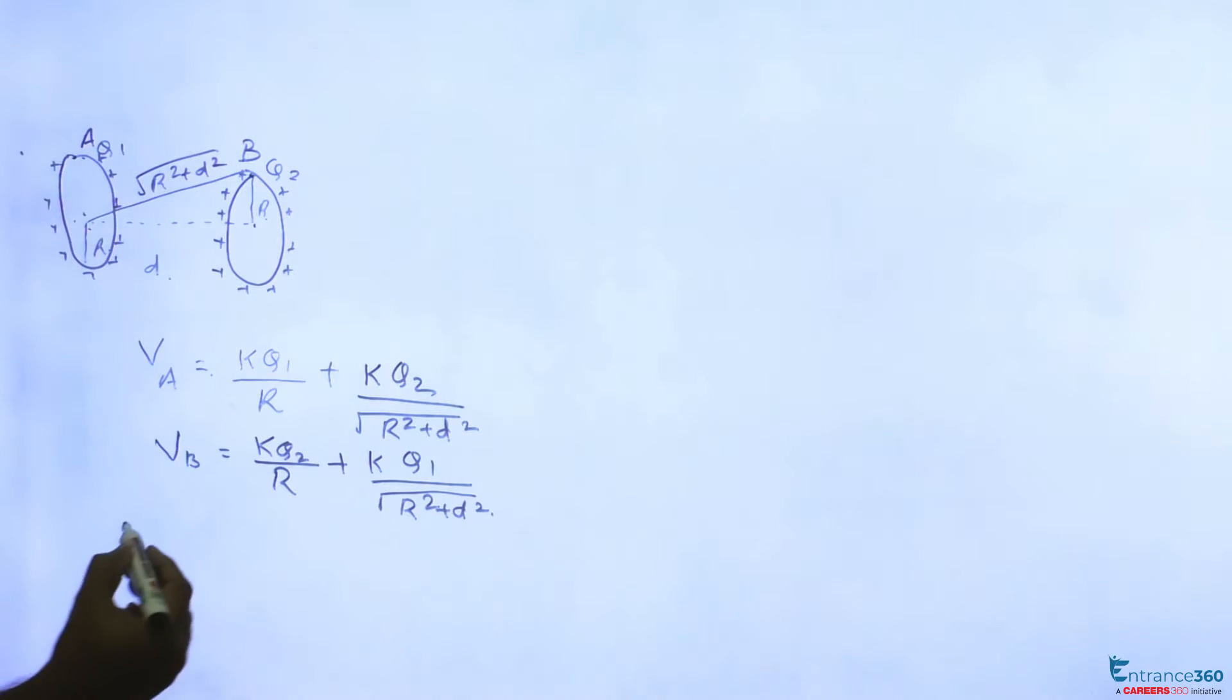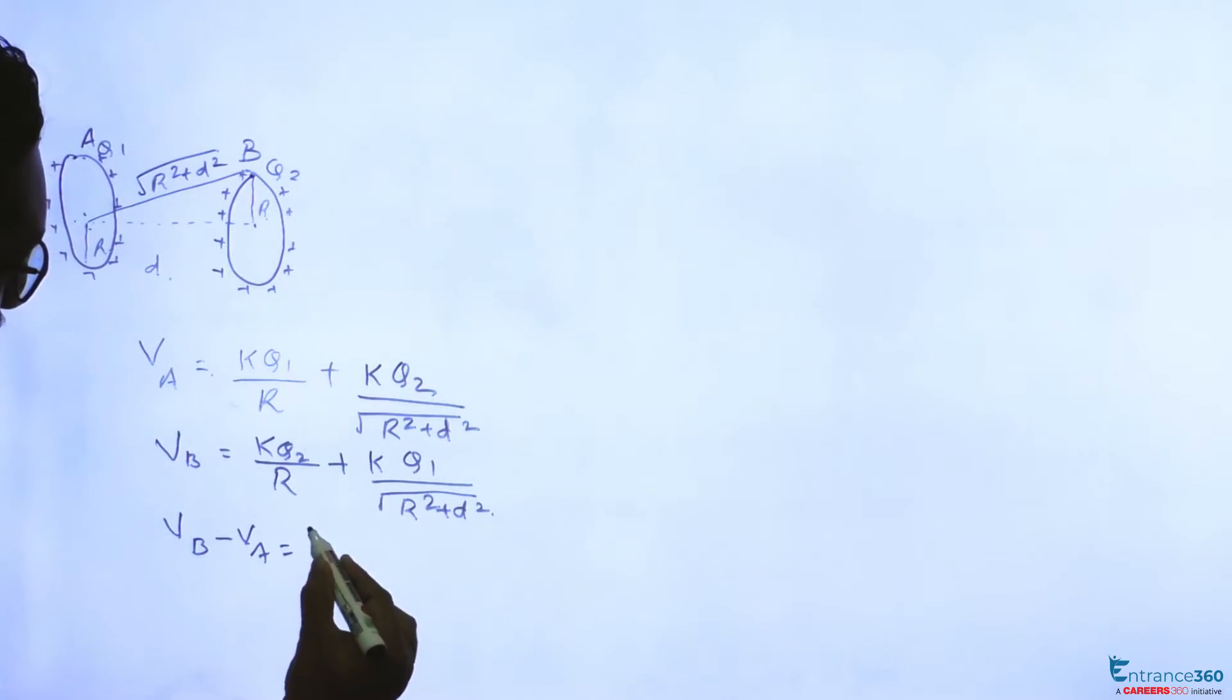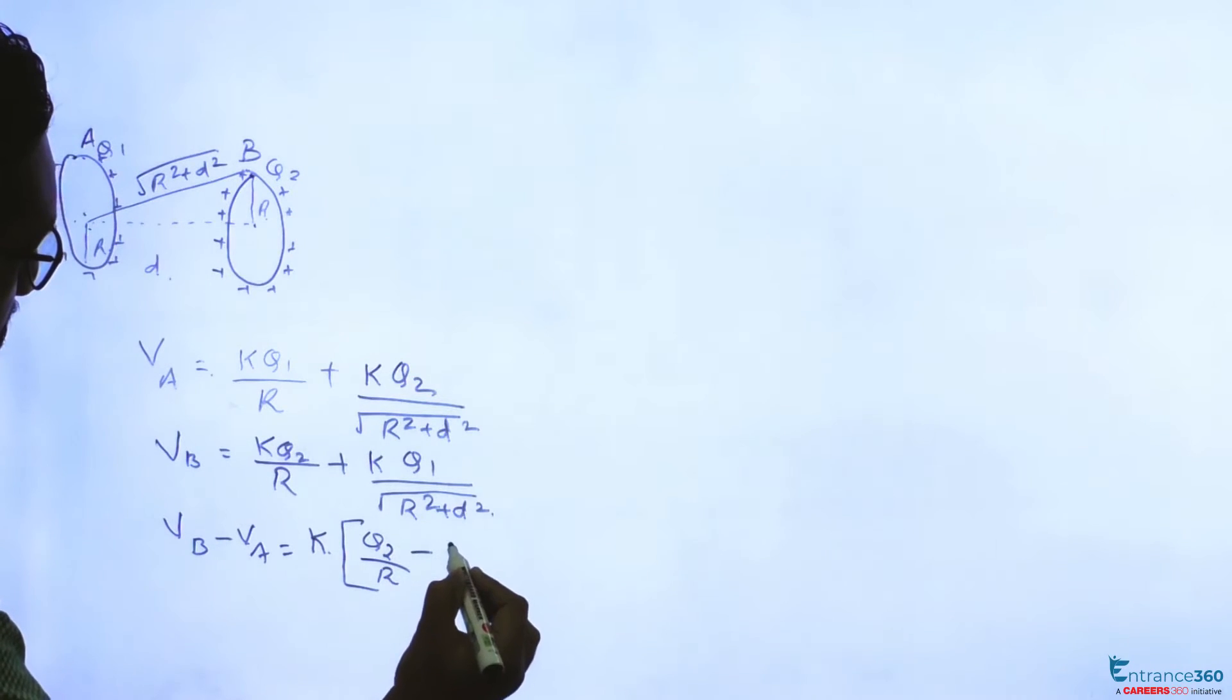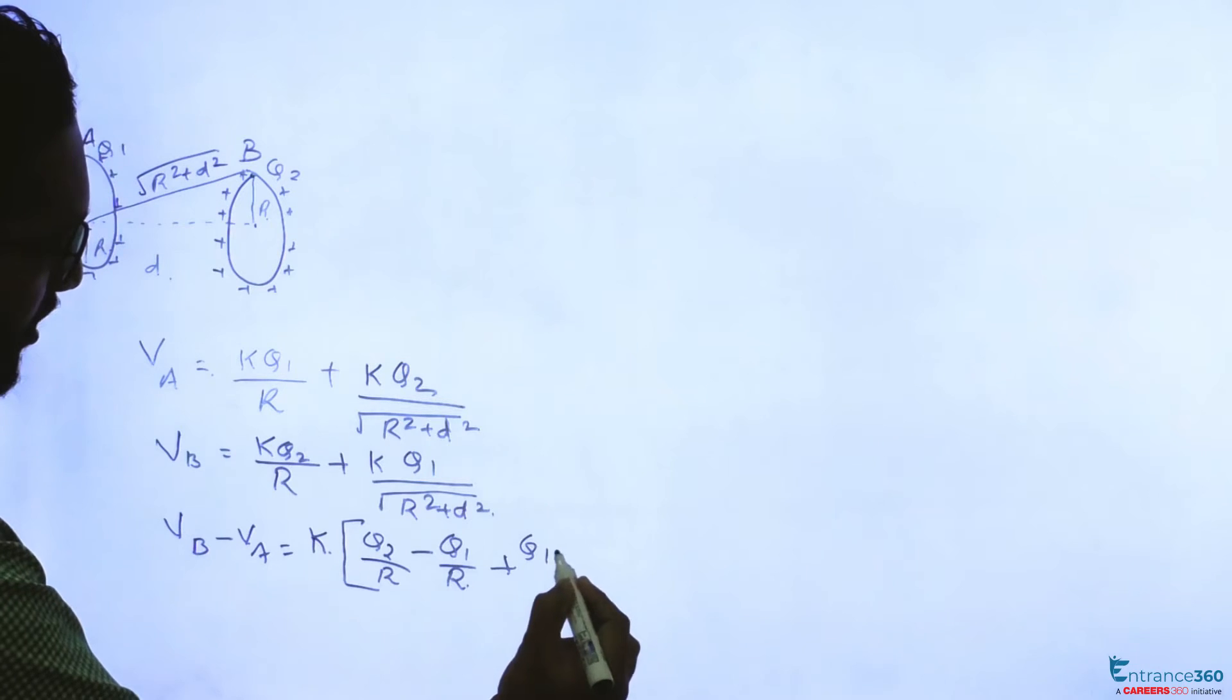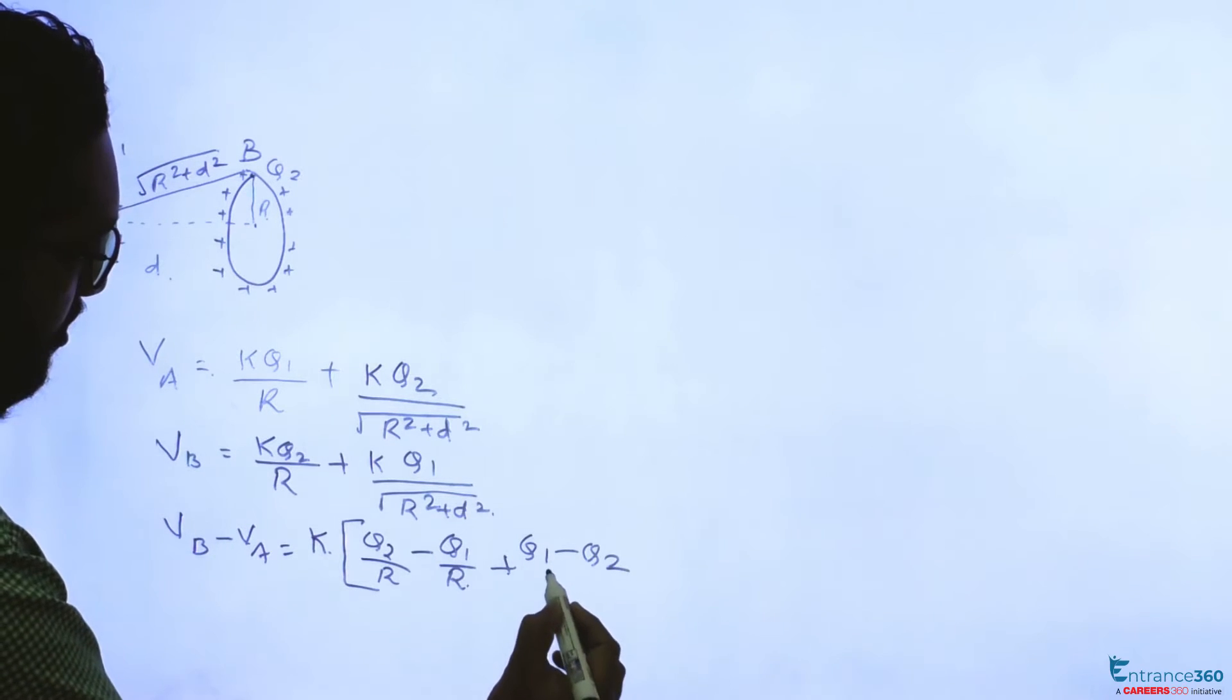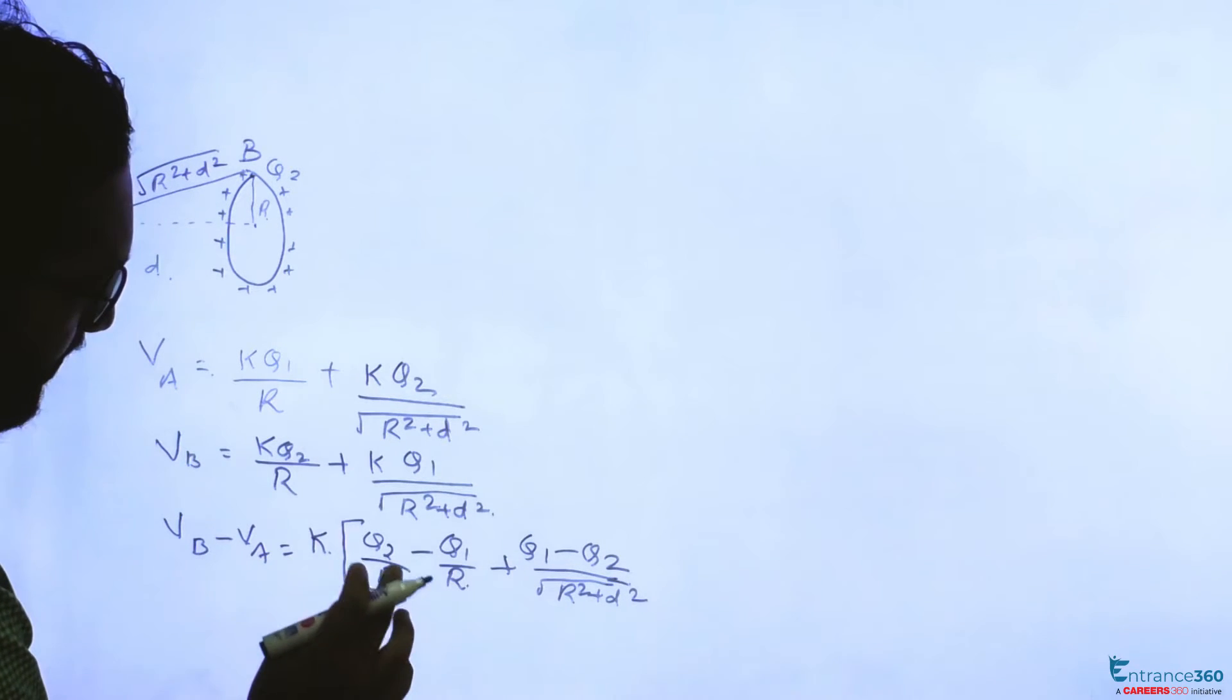And potential difference VB minus VA will be K Q2 by R minus Q1 by root of R square plus D square plus K Q1 by R minus Q2 by root of R square plus D square.